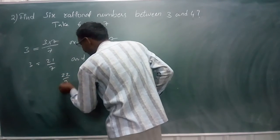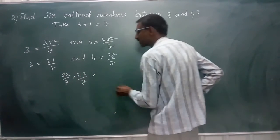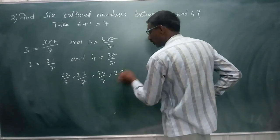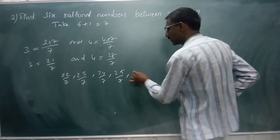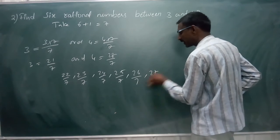22 by 7, the next one is 23 by 7, the next one is 24 by 7, next 25 by 7, next 26 by 7, next.